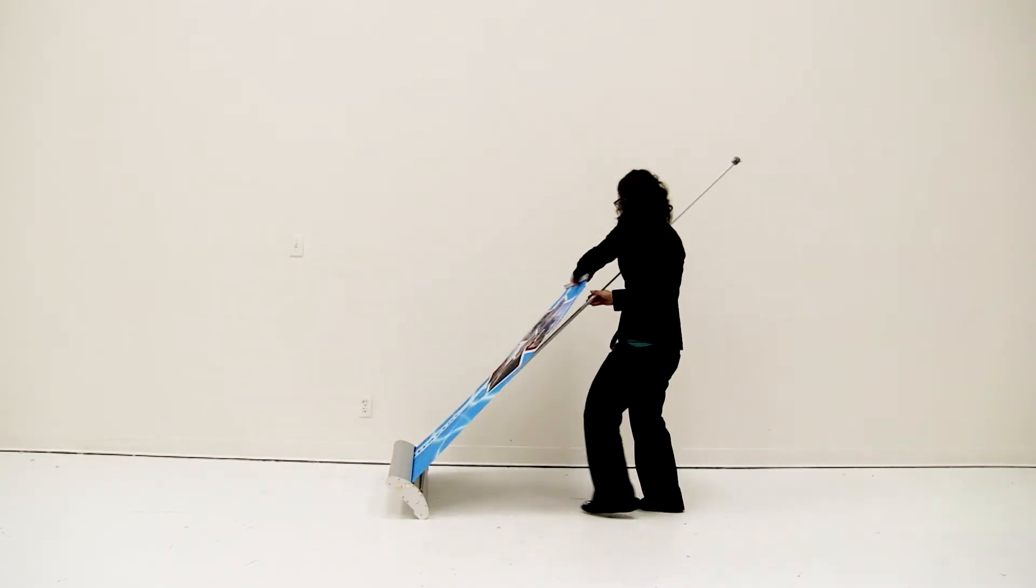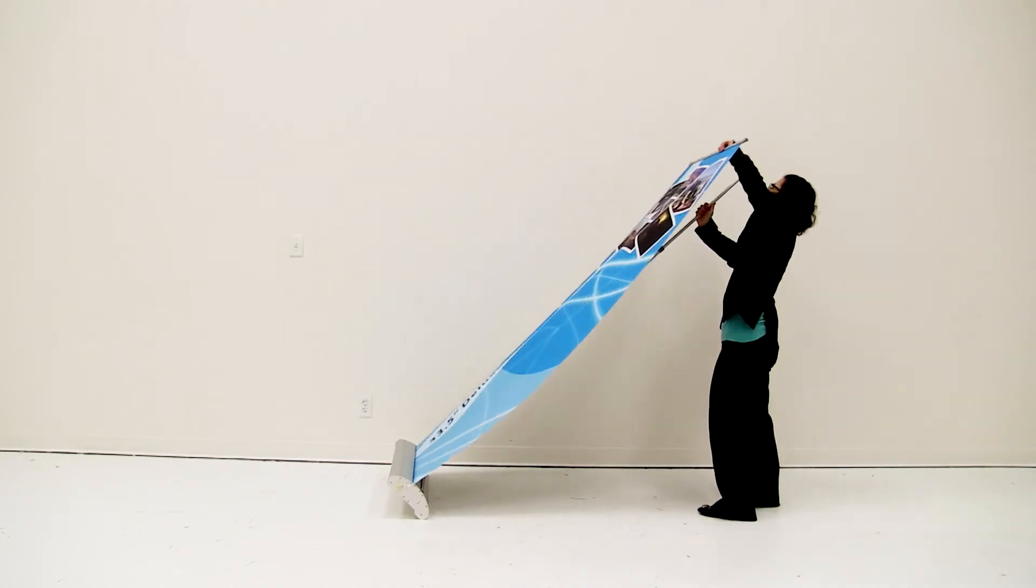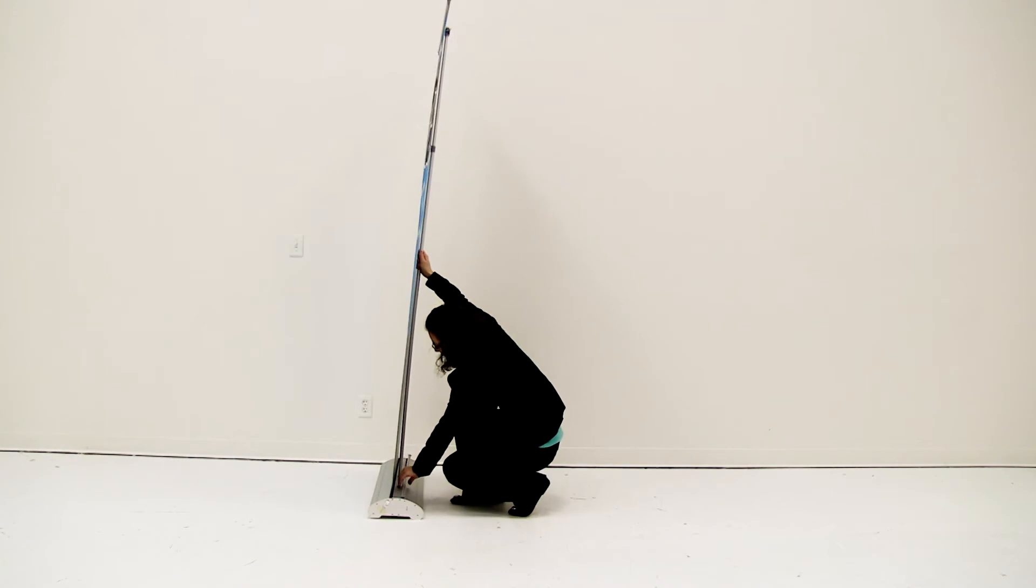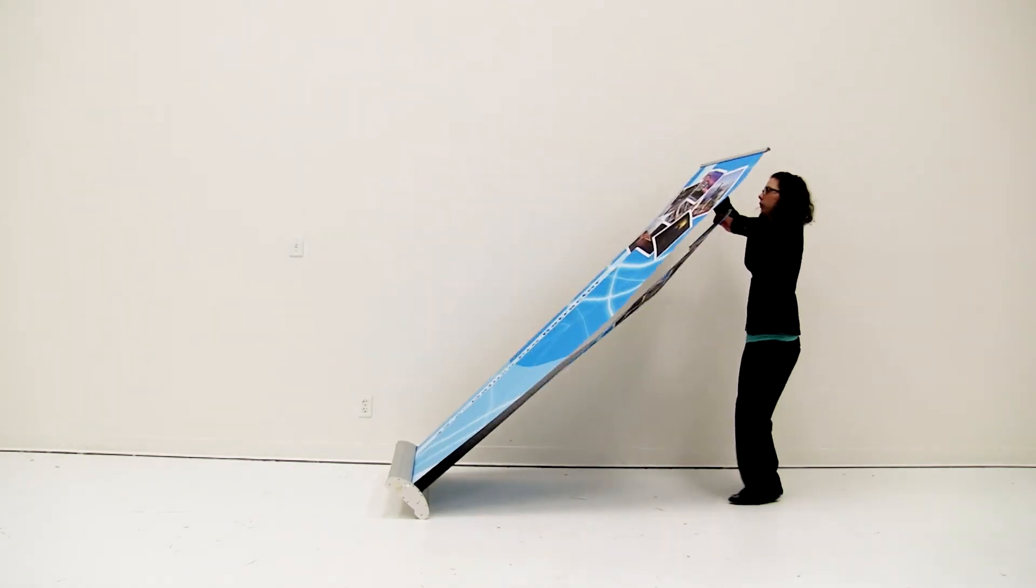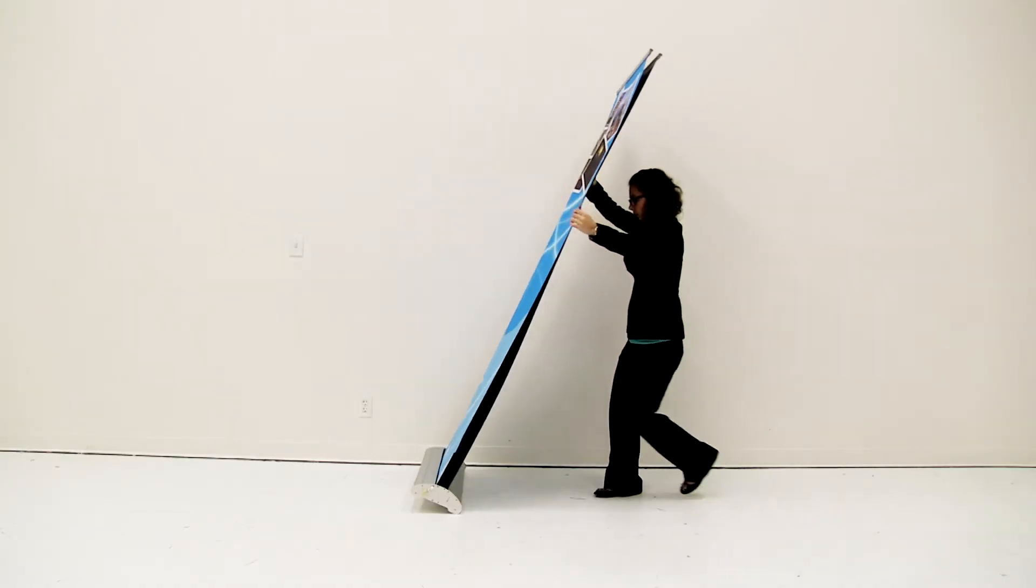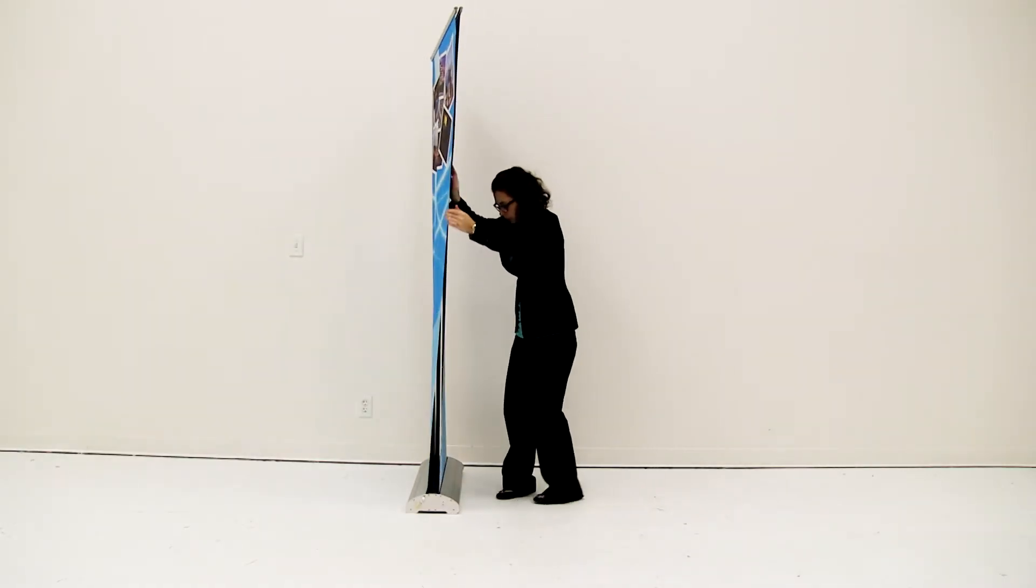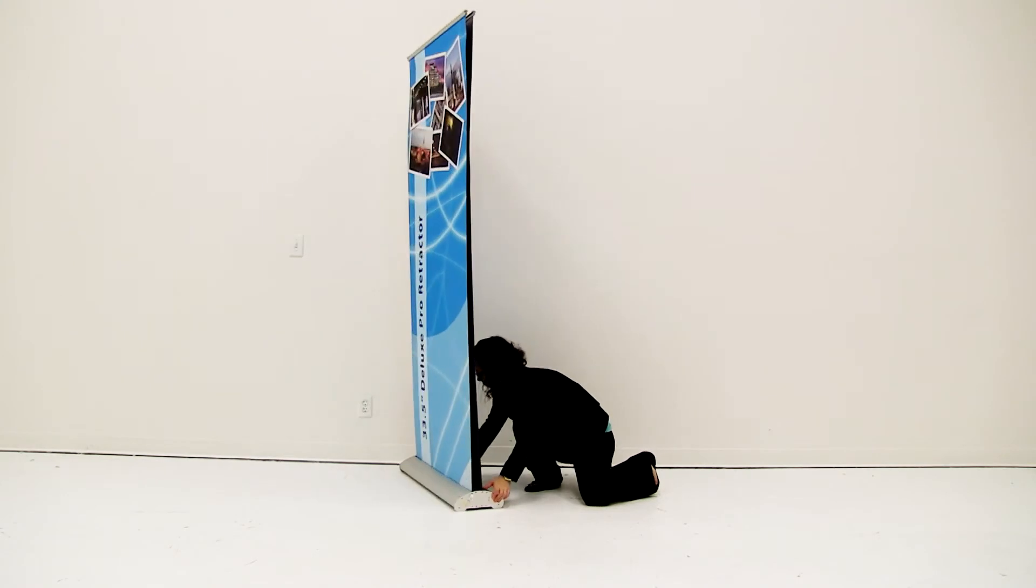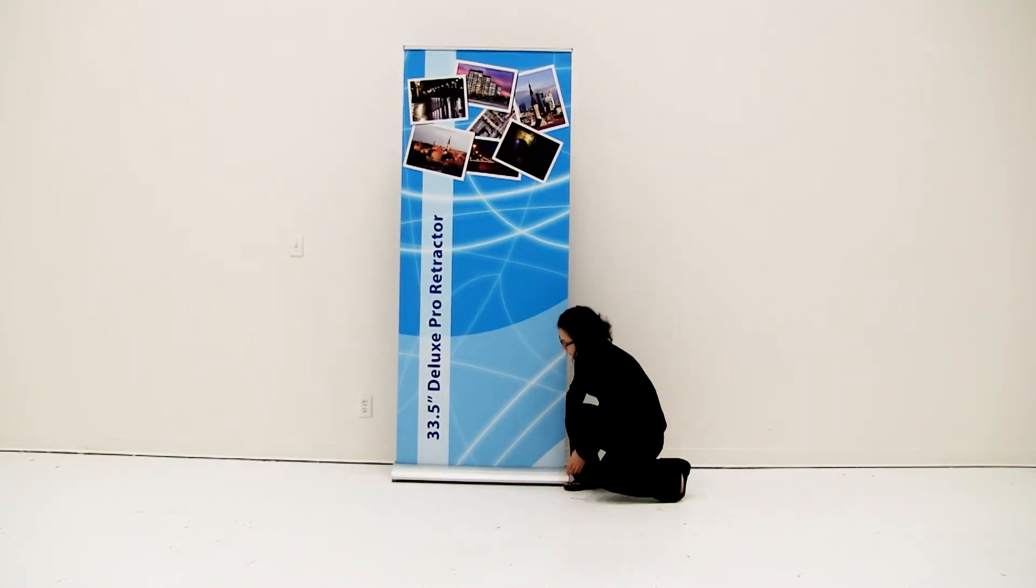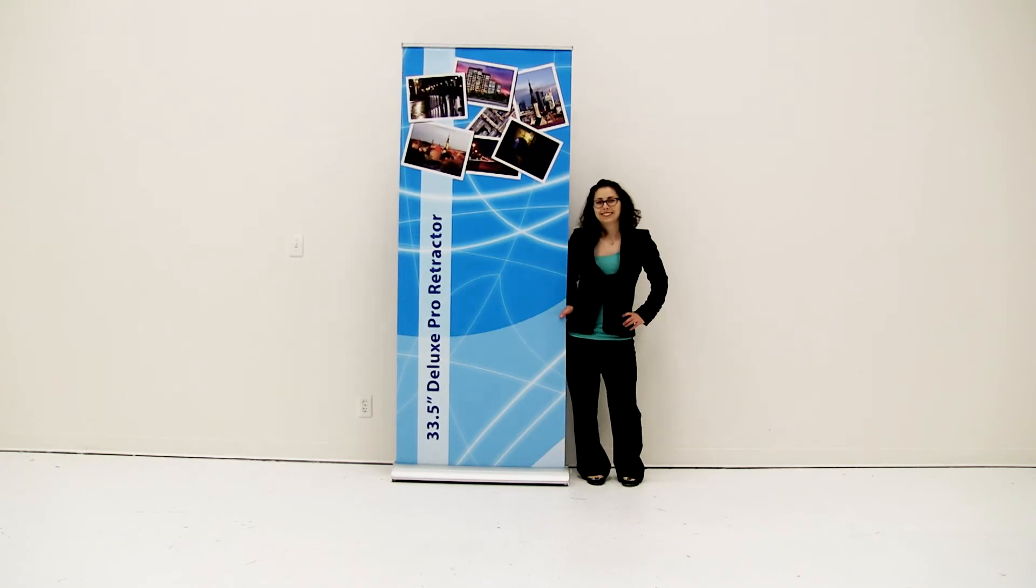Gently pull up on one of the snap rails as you lean the base backwards. Attach the snap rail to the top of the telescoping pole. Lean the base back into standing position, then gently pull up on the other snap rail as you lean the retractor backwards. Attach the snap rail to the top of the telescoping pole. You are now ready to utilize the marketing power of the Deluxe Pro Double Retractor.